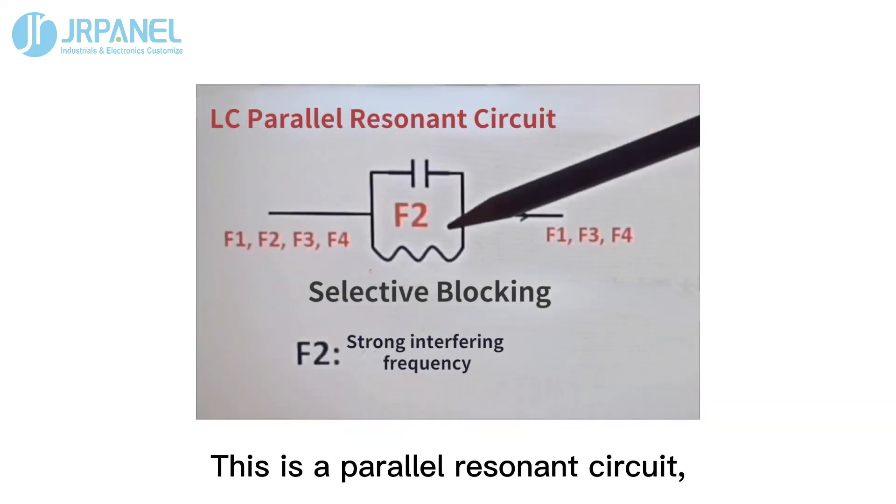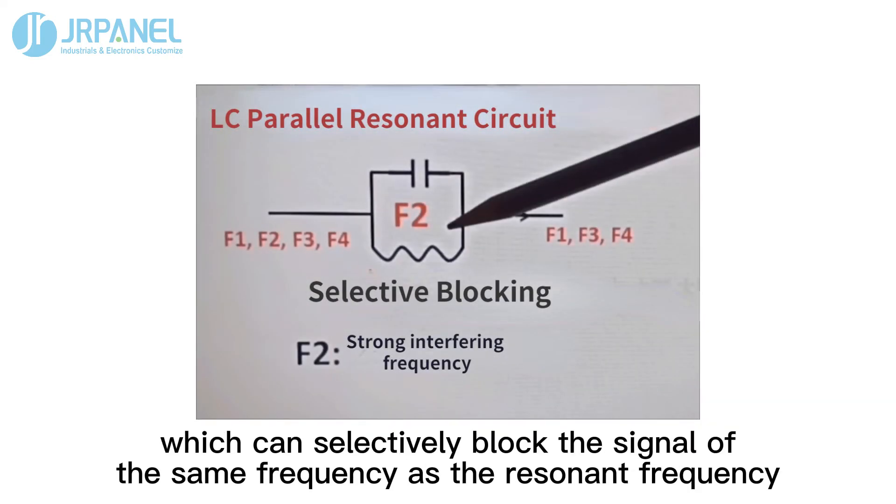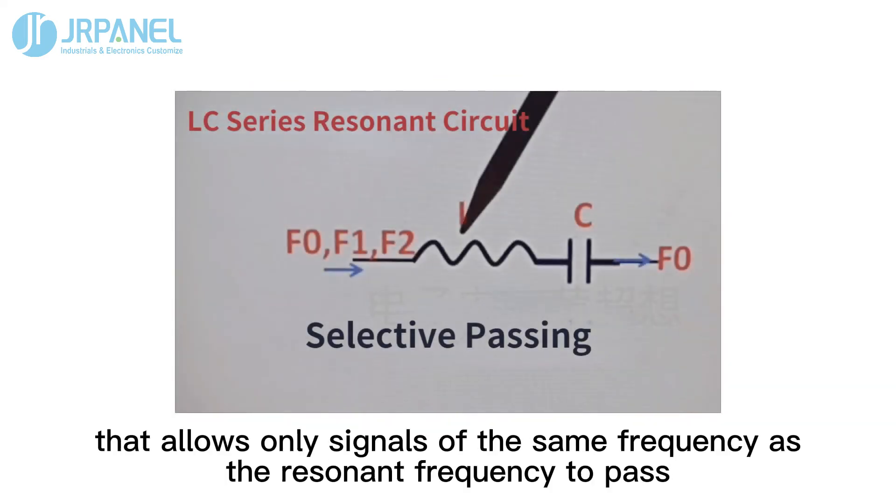This is a parallel resonant circuit, which can selectively block the signal of the same frequency as the resonant frequency. This is a series resonant circuit that allows only signals of the same frequency as the resonant frequency to pass.